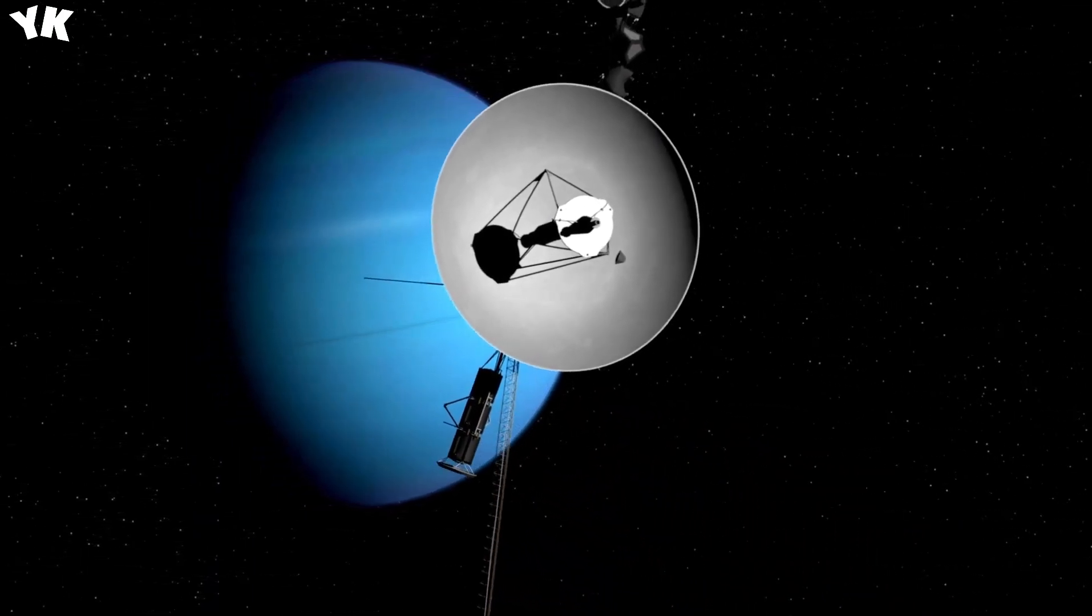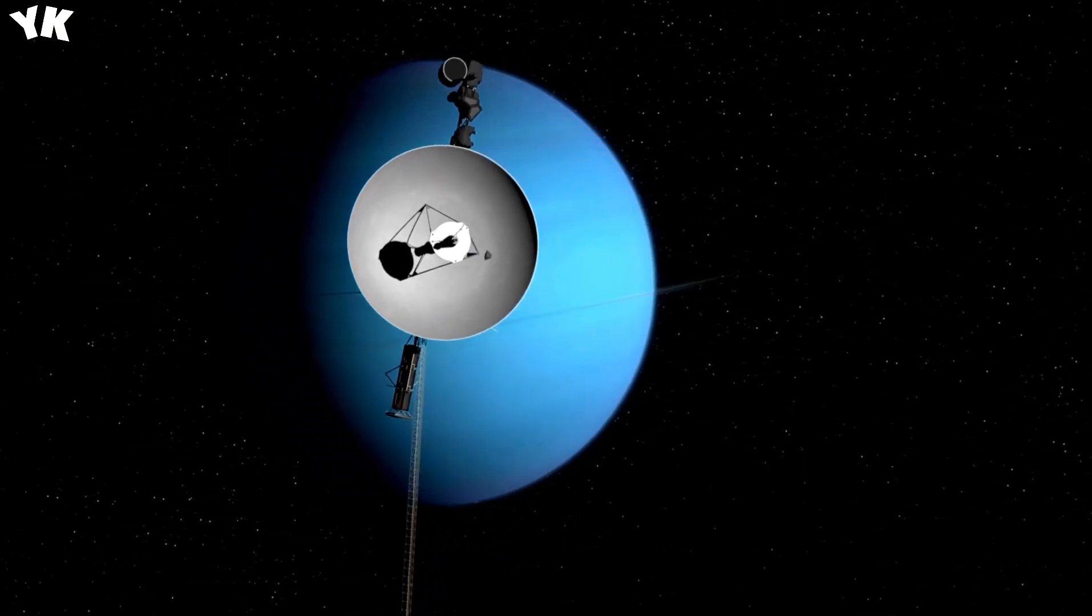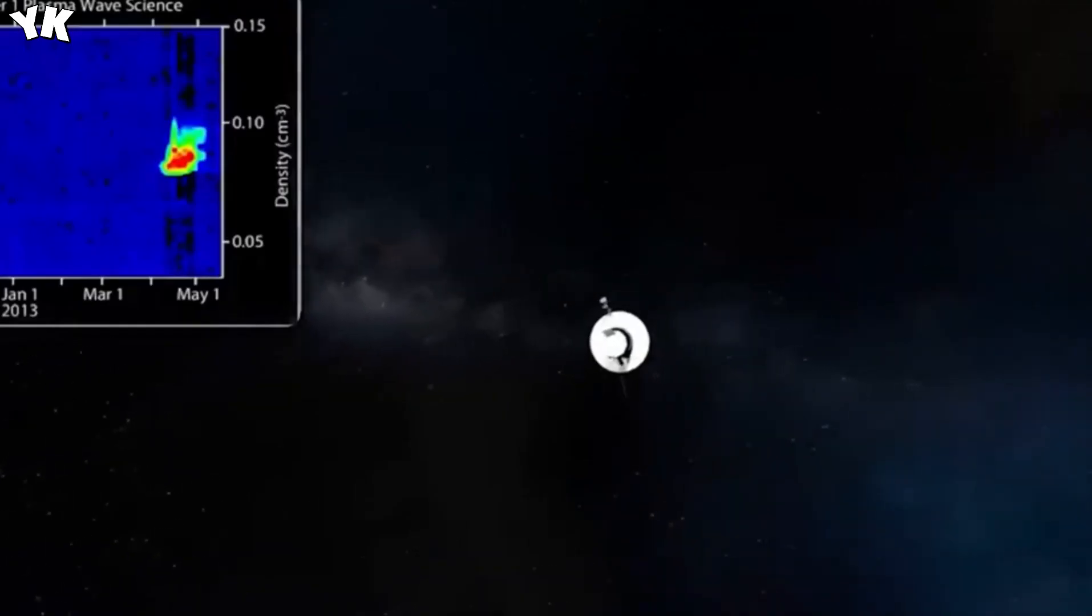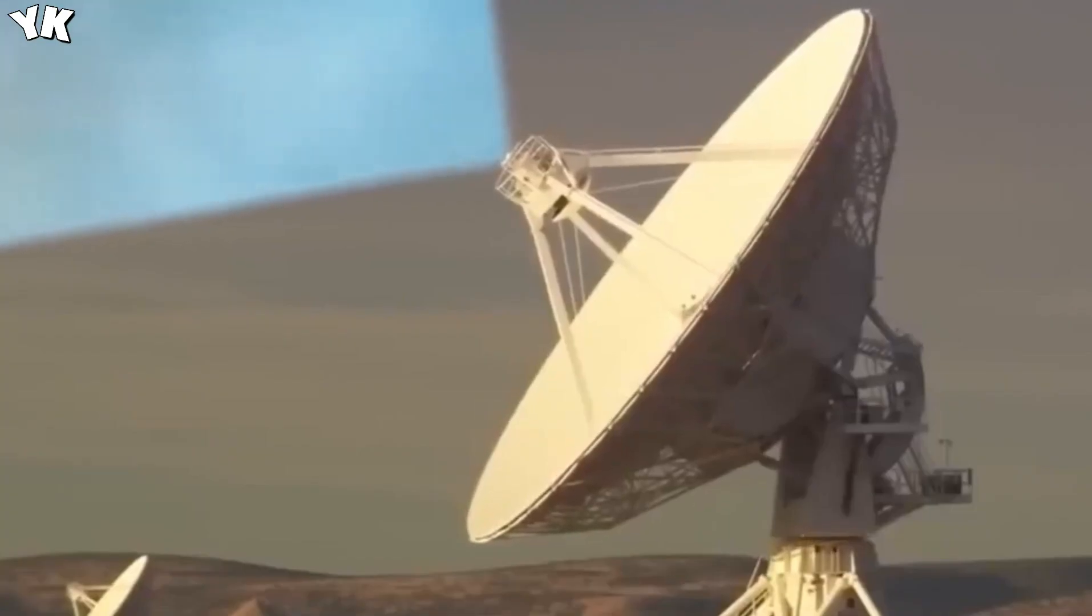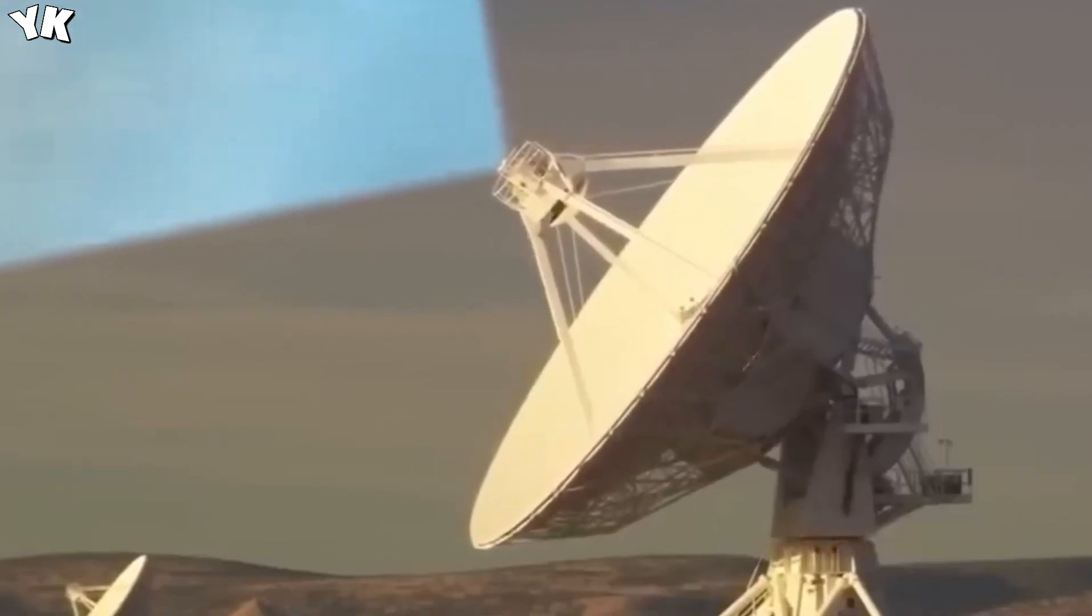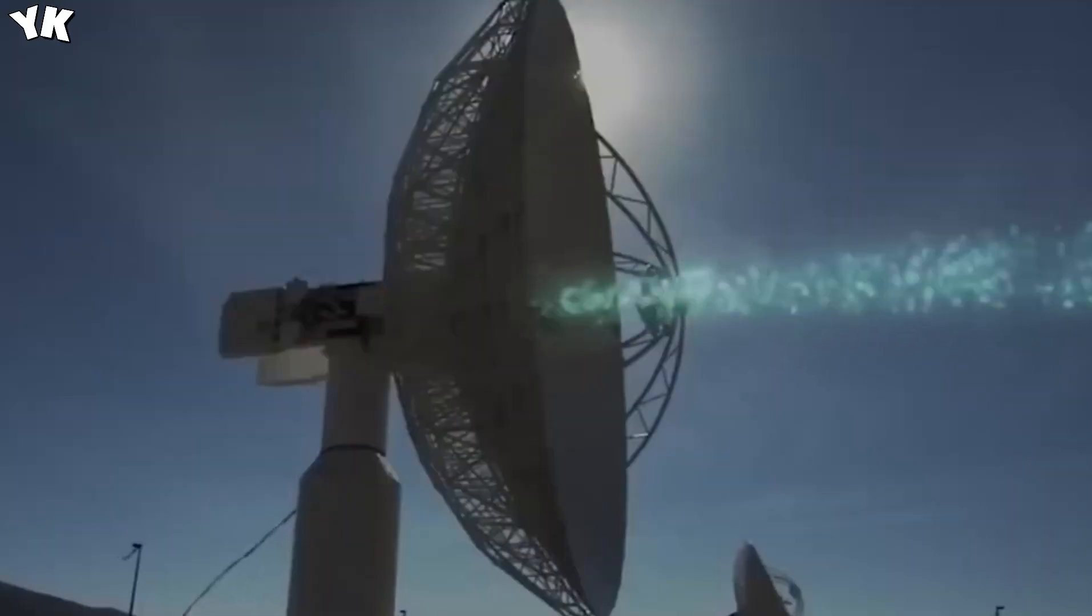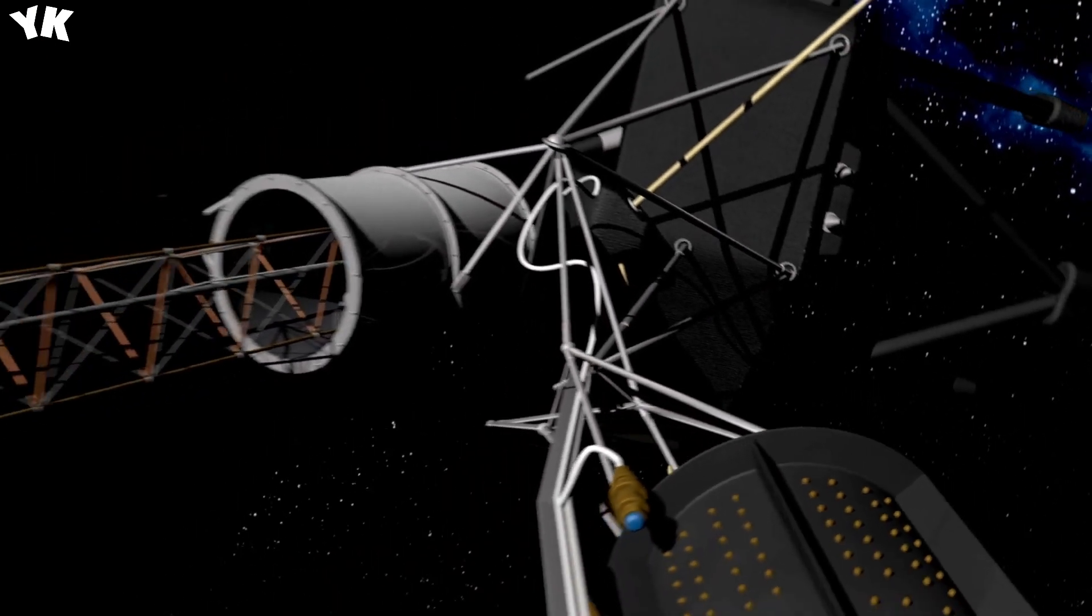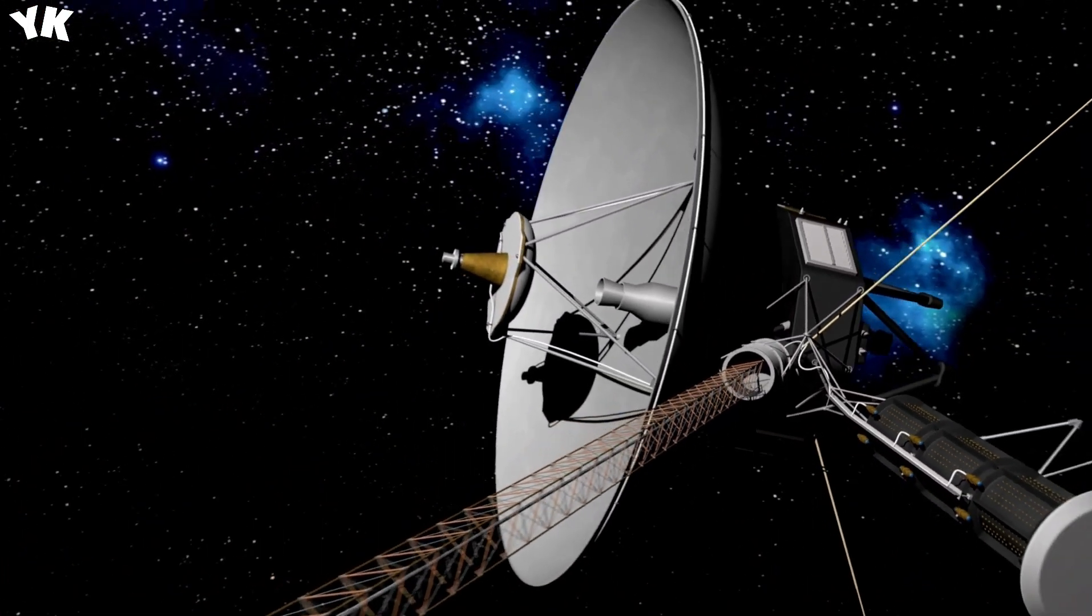With the source of the problem identified, engineers swiftly devised a solution. They sent a command to Voyager 1, instructing the onboard system to switch to the correct computer for transmitting the telemetry data. Although this fix entailed relatively low risk, it required immense patience due to the significant time delay caused by the vast distance between Earth and Voyager 1. Radio signals took nearly 22 hours to travel back and forth, necessitating precise coordination during the troubleshooting process. Their efforts exemplified the importance of leveraging past knowledge and combining it with present technology to overcome challenges in space exploration.